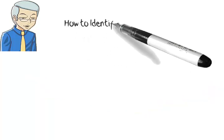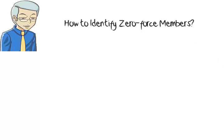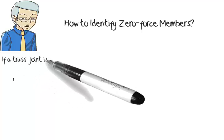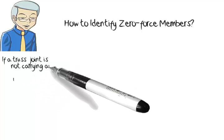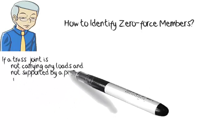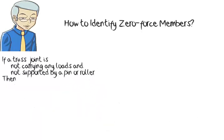How do we identify zero-force members in a truss? There are three basic rules for identifying zero-force members without resorting to any calculations. If a truss joint is not subjected to any applied loads and is not supported by a pin or roller, then the following rules can be applied repeatedly to identify all the zero-force members.